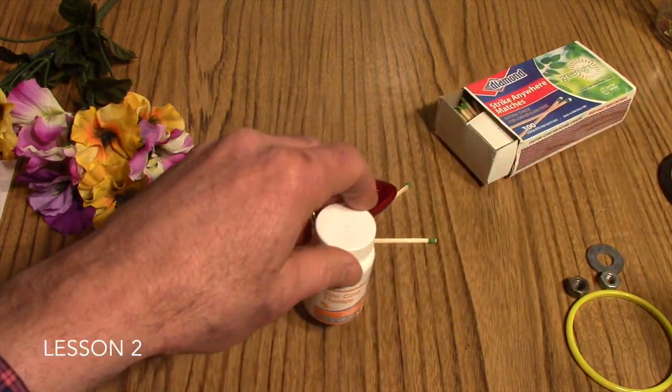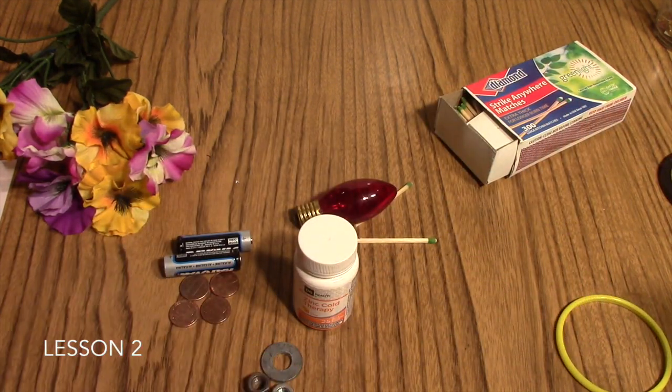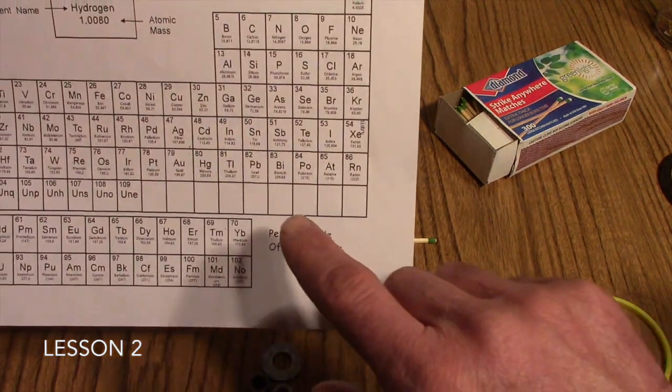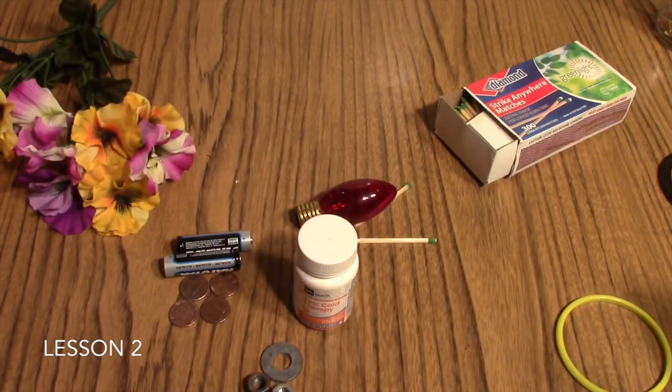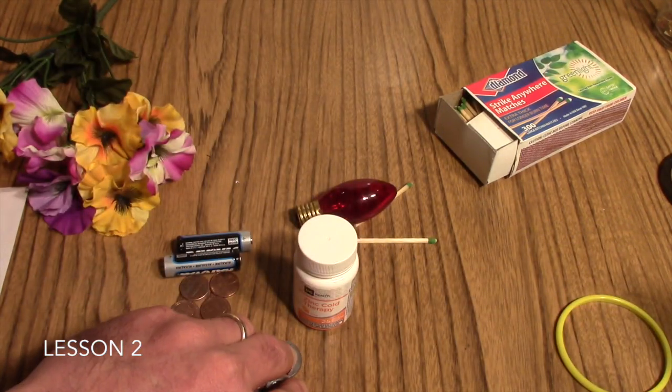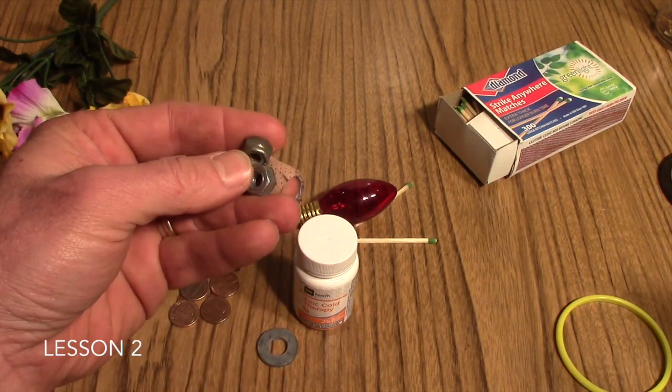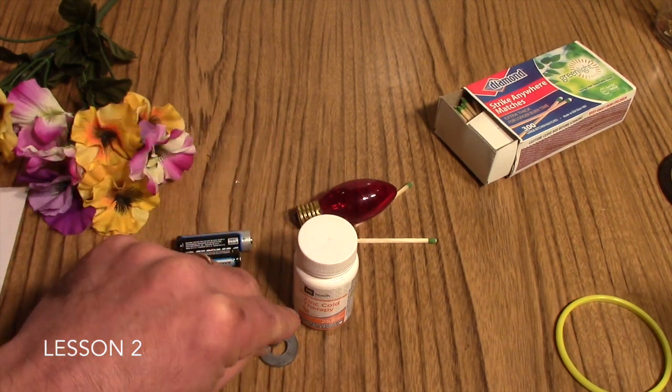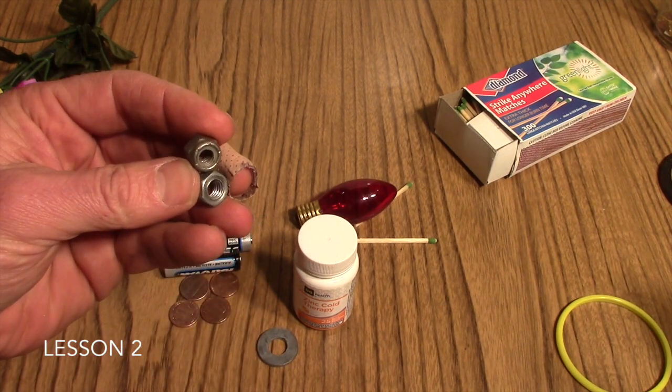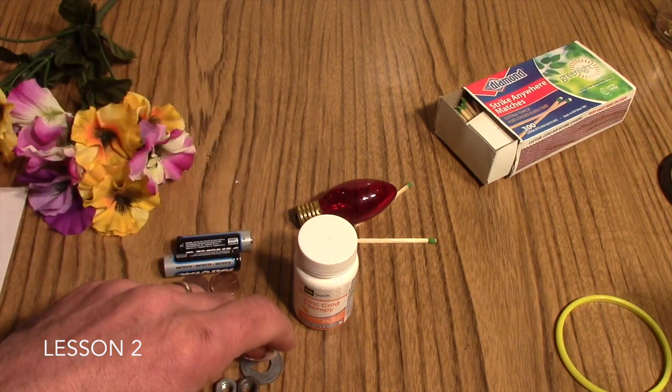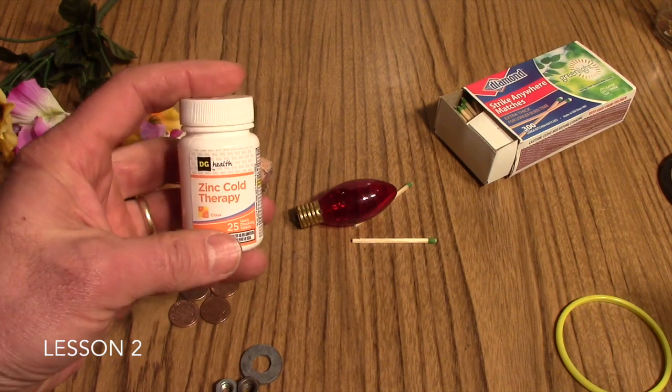Another example: if a student has their birthday on the 30th of the month, if you refer to the table, number 30 is the element zinc. Zinc is a metal, a gray metal, that is often used to coat or galvanize washers, bolts, nuts, things like that. And so these are readily available and a student can use these as their subatomic particles.